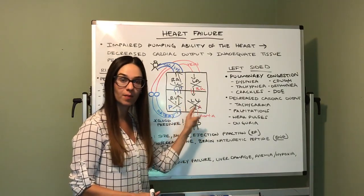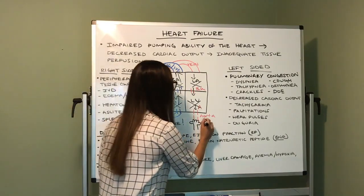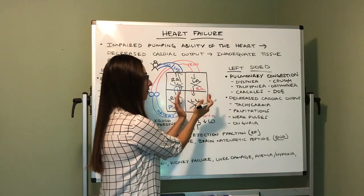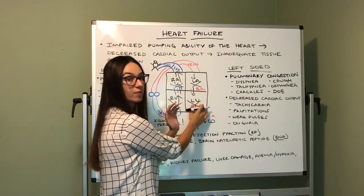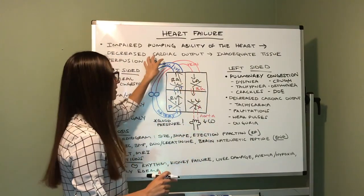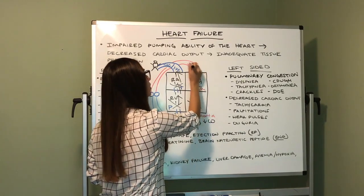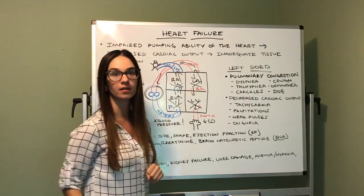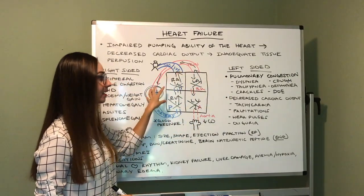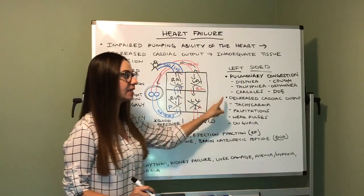If the left ventricle cannot effectively pump oxygenated blood to our aorta, so our aorta can take that oxygen to our cells and tissues, you will have decreased cardiac output. Think two-fold: one is decreased cardiac output because there is not an effective ejection of oxygenated blood from the left ventricle into the aorta. The other is where does this blood back up to? We're thinking it backs up into our pulmonary vein and therefore into our lungs — pulmonary congestion.